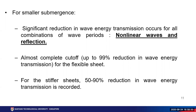There was a discrepancy of one order between theory and experiment. For the flexible sheet with smaller submergence, there was almost 99% reduction in wave-transmitted energy, proving that the structure is highly efficient as a wave damping mechanism. For the stiffer sheets — 7% and 10% curing agent — a 50% to 90% reduction in wave energy transmission was recorded. From the results, it is seen that our flexible, horizontal, submerged viscoelastic sheet acts as an excellent wave damper for the wave parameters considered in this study.